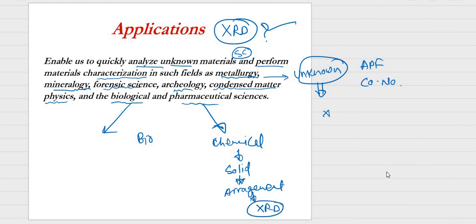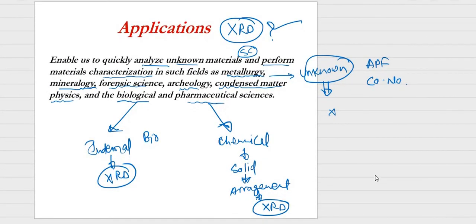XRD is also used in biological and pharmaceutical sciences, since most pharmaceutical materials are in solid form and their internal atomic arrangement must be known. Biological sciences similarly require knowledge of internal structure of various materials. So XRD has wide-ranging applications across many fields. That is all about X-ray diffraction and its applications — remaining topics will be covered in the next video. Please like, subscribe, and keep learning. Thank you!